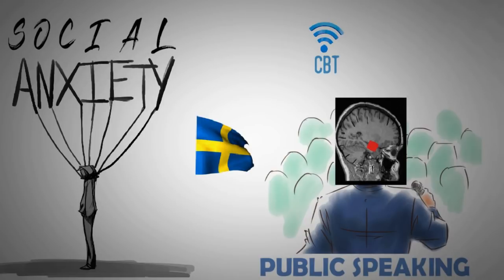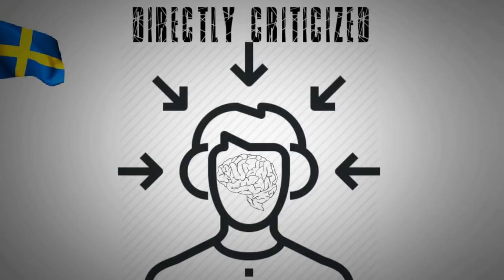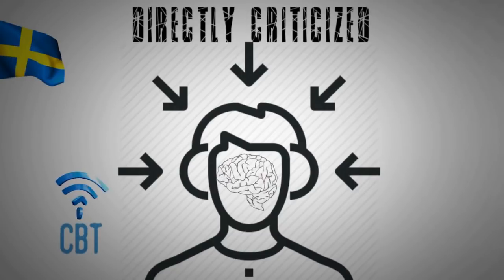But after undergoing Internet-delivered CBT for 9 weeks, their amygdala shrunk, which also correlated with the degree of improvement in the fear of public speaking. This study also revealed that when these patients were criticized directly, their amygdala fired up intensely, more than the amygdala of people without the disorder. But after the therapy, this activity decreased to normal levels.